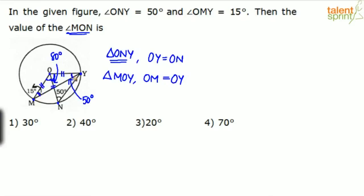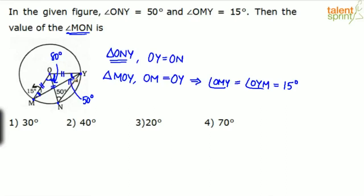If angle OMY is 15 degrees, then angle OYM will also be 15 degrees, because it is an isosceles radius triangle. This implies angle OMY equals angle OYN, which equals 15 degrees. Now 15 plus 15 is 30, so angle MOY will be 180 minus 15 minus 15, which equals 150 degrees.